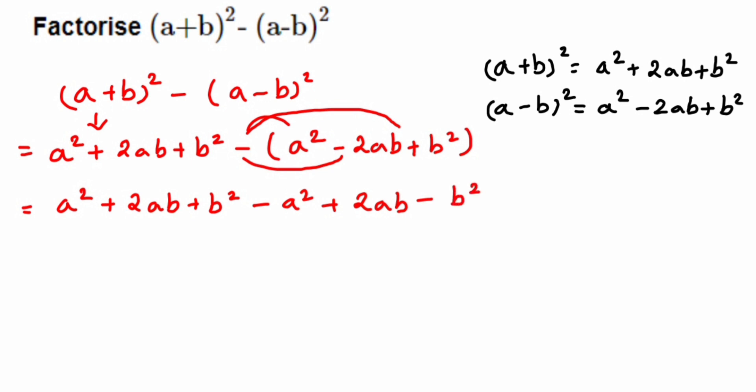a² and minus a² can get cancelled because the signs are opposite. Similarly, plus b² and minus b² can also get cancelled.